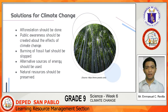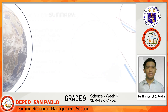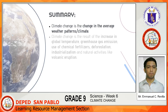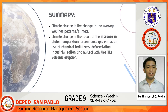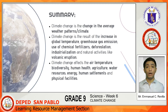So far, we were able to describe what climate change means, explain its causes and effects, and suggest ways to reduce its impact. In summary, climate change is the change in the average weather pattern or climate. It results from the increase in global temperature, greenhouse gas emission, use of chemical fertilizers, deforestation, industrialization, and natural activities like volcanic eruption. Climate change affects air temperature, biodiversity, human health, agriculture, water resources, energy, human settlements, and physical facilities.